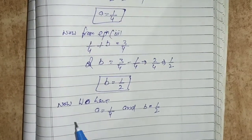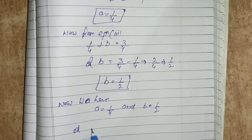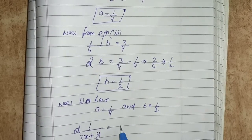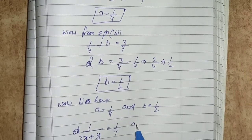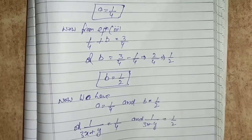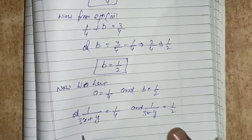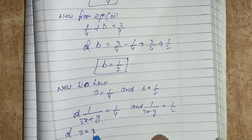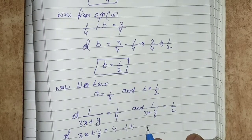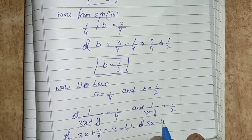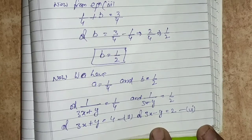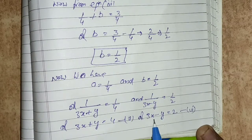Reversing the substitutions: a equals 1 upon 3x plus y equals 1 by 4, so 3x plus y equals to 4. This is equation number 5. Similarly, b equals 1 upon 3x minus y equals 1 by 2, so 3x minus y equals to 2. This is equation number 6.